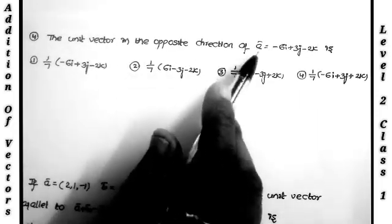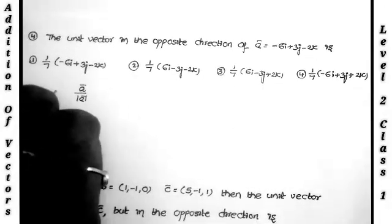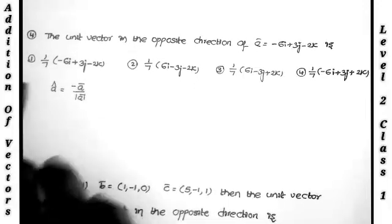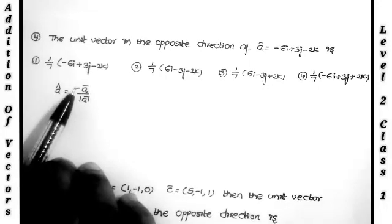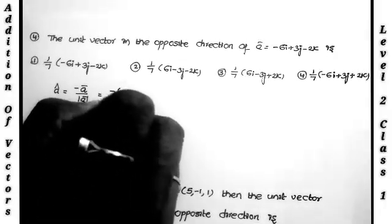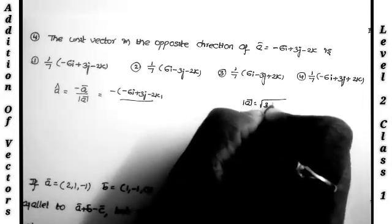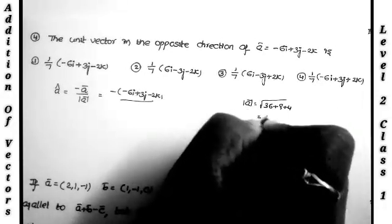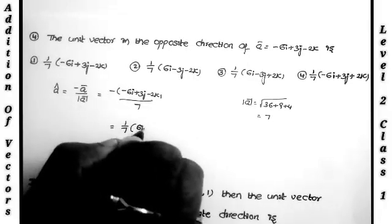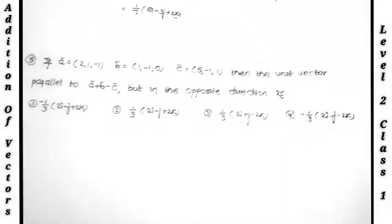Next question: unit vector in the opposite direction of a bar = −6i+3j−2k. The formula for unit vector is a bar / |a bar|; in the opposite direction we apply a negative sign. |a| = √(36+9+4) = √49 = 7. Answer = −(−6i+3j−2k)/7 = (6i−3j+2k)/7, which is (1/7)(6i−3j+2k) — the third option.